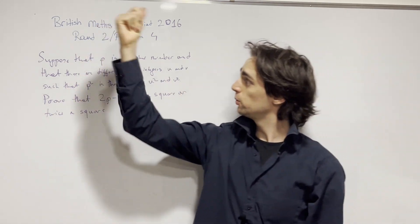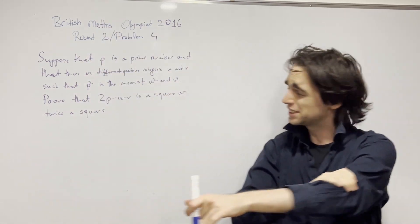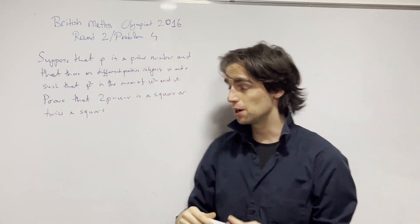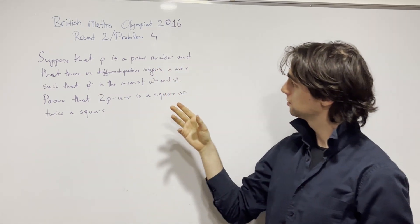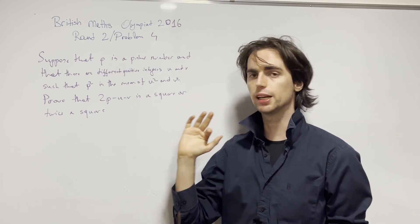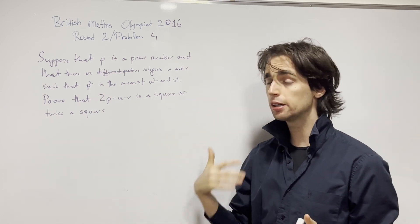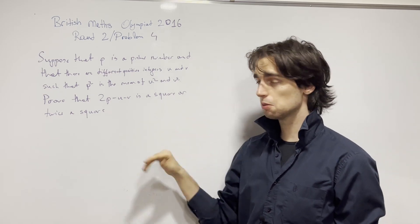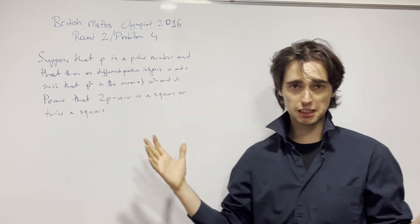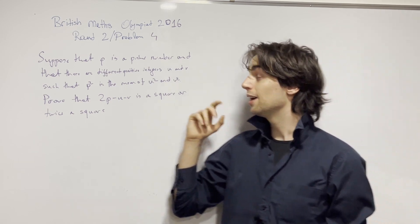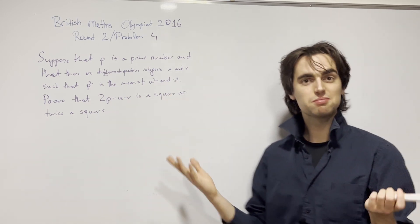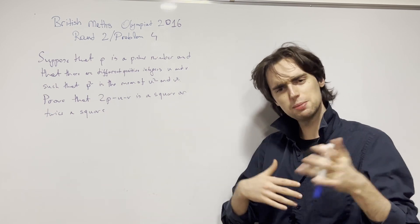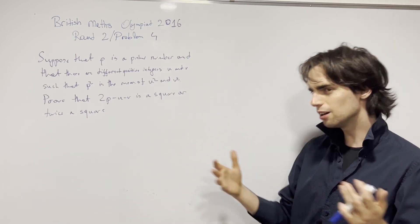Hello fellow problem solvers! Today we're going to be doing a problem from the British Math Olympiad 2016 Round Two, Problem Number Four. I suggest you try this problem out for a minimum of 10 to 20 minutes, ideally 45 minutes to an hour. Why am I doing the British Math Olympiad? I saw a comment from somebody fearing for it, so let me make a couple of videos and be helpful.